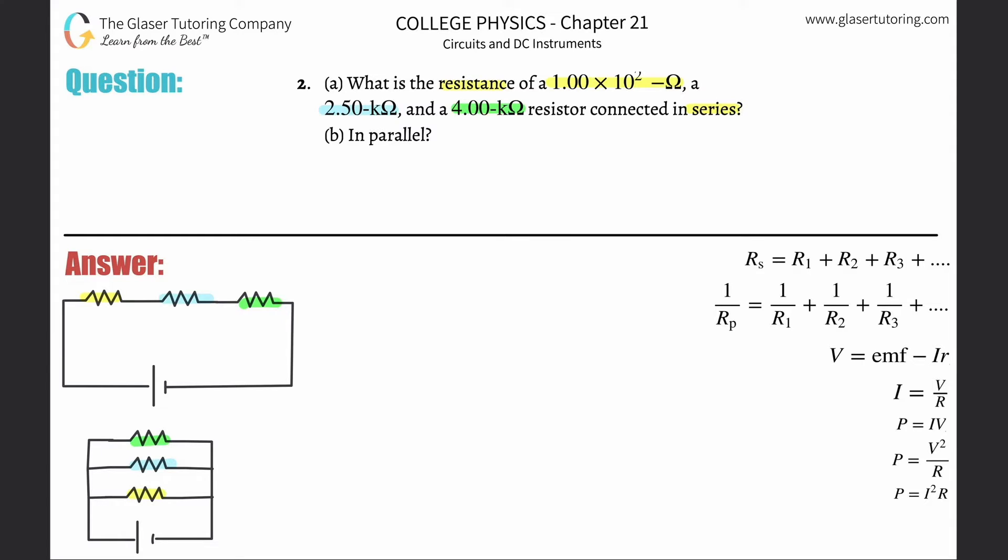Now that we have that out of the way, let's calculate. For letter A, the total resistance in series is simply adding all those things up. You've got to make sure you have consistent units. I'm going to convert everything into ohms, not kilo-ohms, but you can certainly give your answer in kilo-ohms.